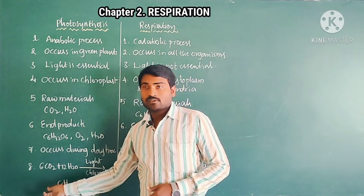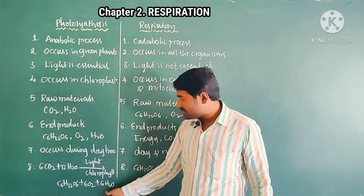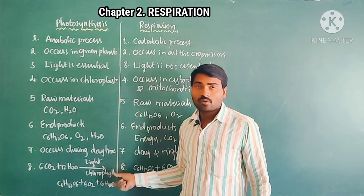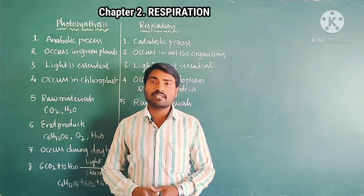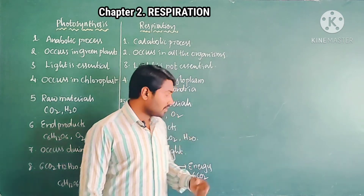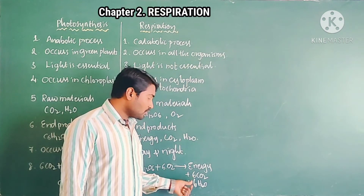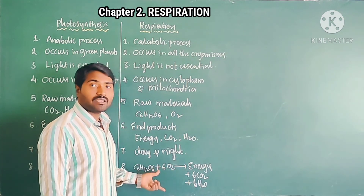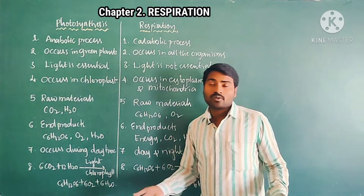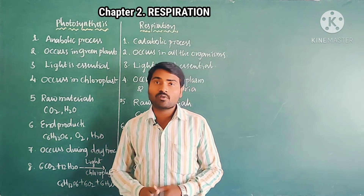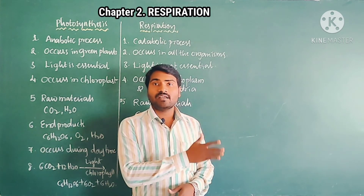Equation for photosynthesis: 6CO2 + 12H2O gives C6H12O6 + 6O2 + 6H2O in the presence of light and chlorophyll. Equation for respiration: C6H12O6 + 6O2 gives energy, CO2, and water. If you write a neat table of 8 points you will definitely get 4 out of 4 marks. We may expect this question as a 4-mark question: write the differences between photosynthesis and respiration.